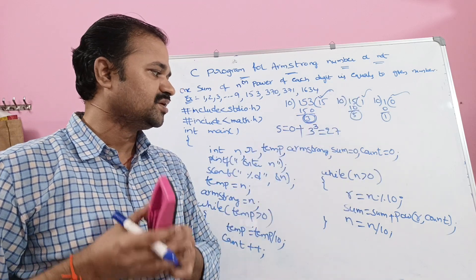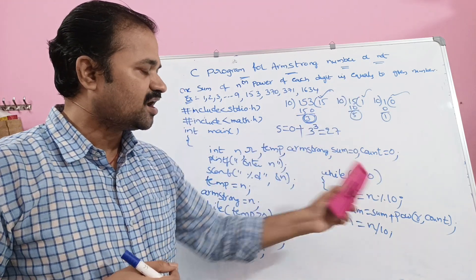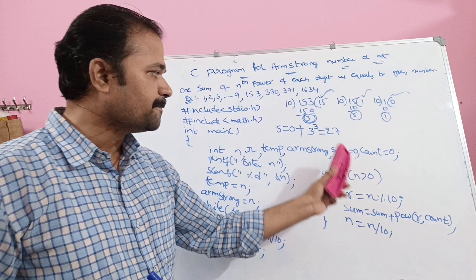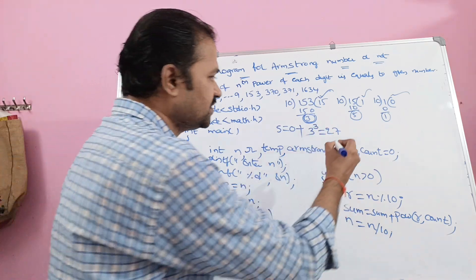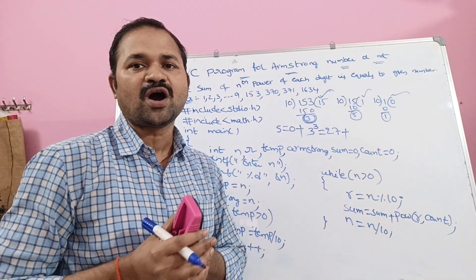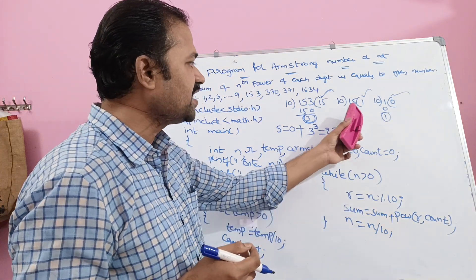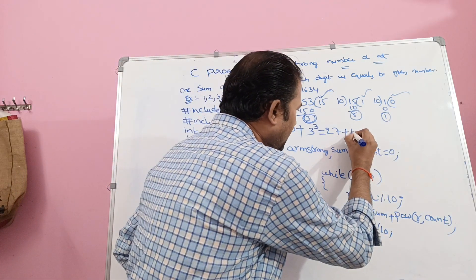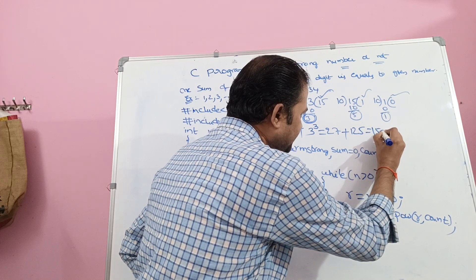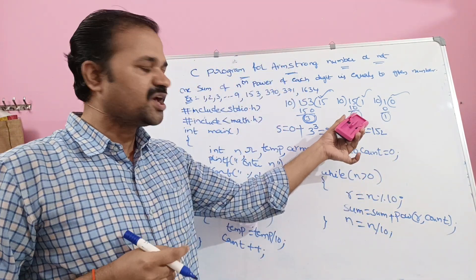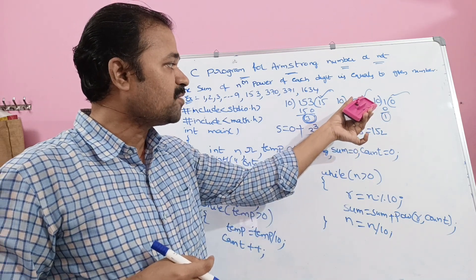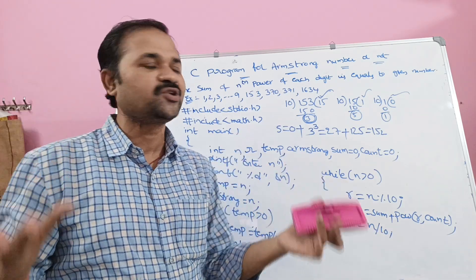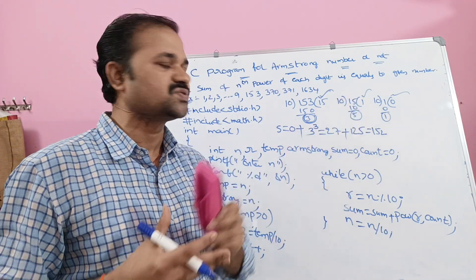Second iteration: 15 is greater than 0, condition is true. r is equal to 15 modulo 10, which gives r equal to 5. Sum is equal to 27 plus pow(5, 3). 5 power 3 is 125, but we add 145 — giving sum as 172. Next, n is equal to 15 divided by 10, so n becomes 1.